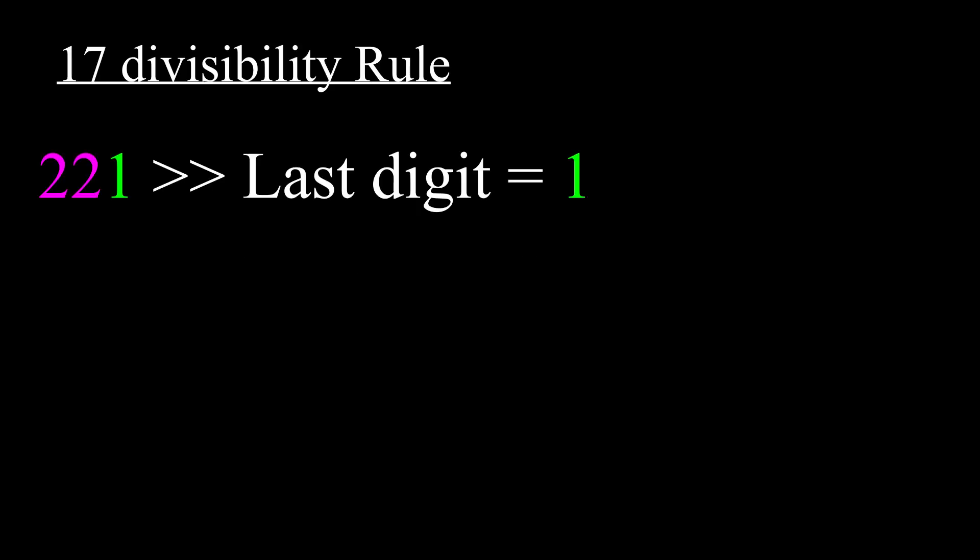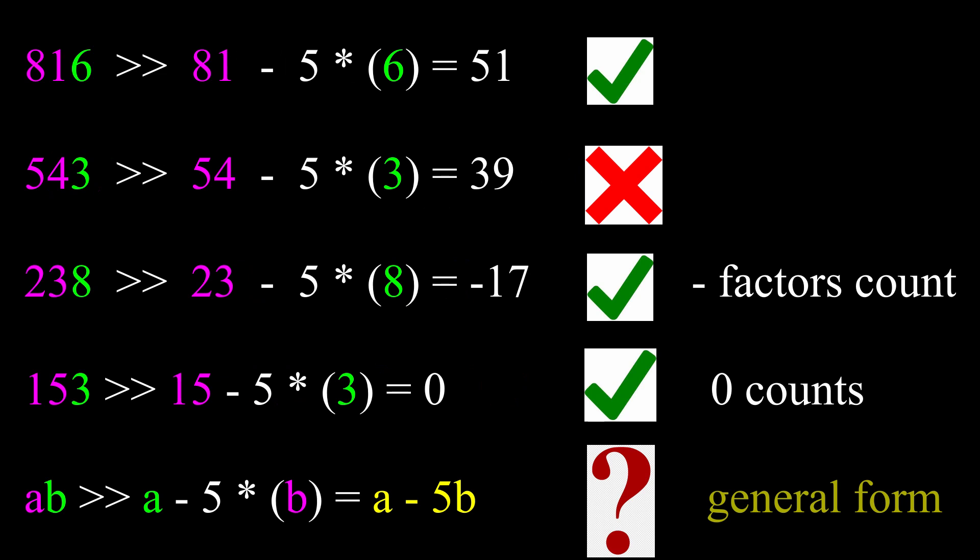You remove the last digit of a number, multiply it by 5, and subtract what remains by the result. Then check that this new number is divisible by 17. Here's some examples.